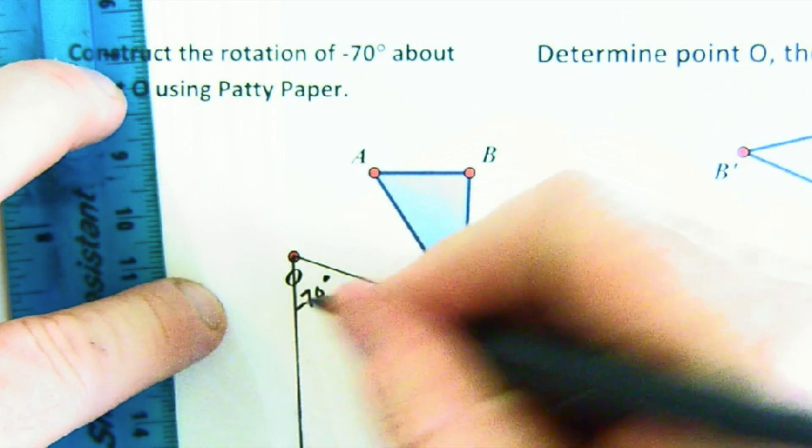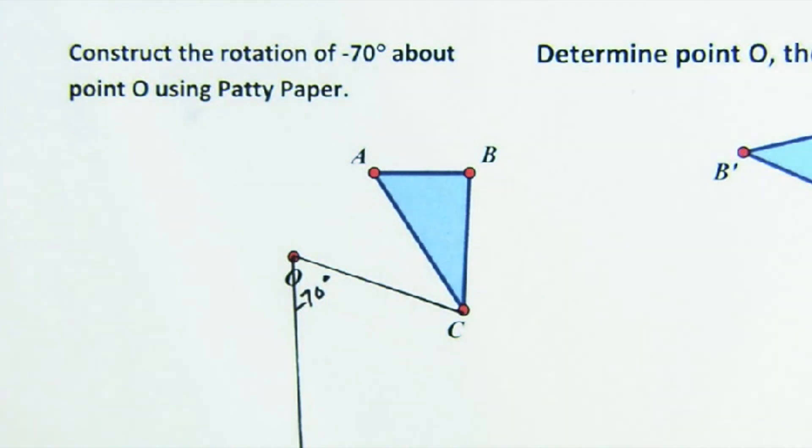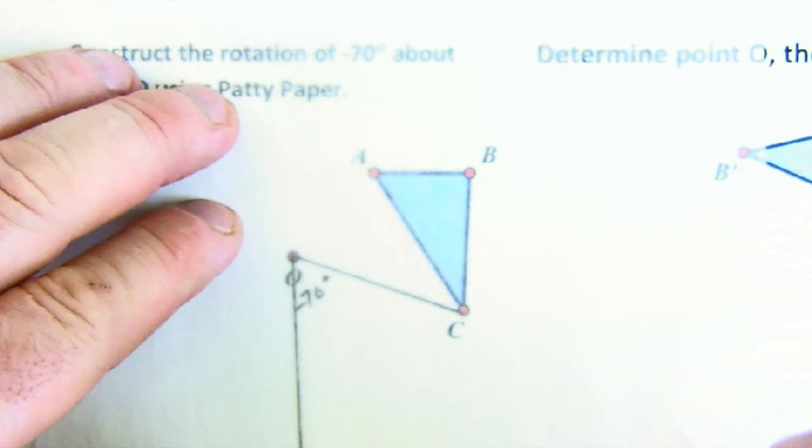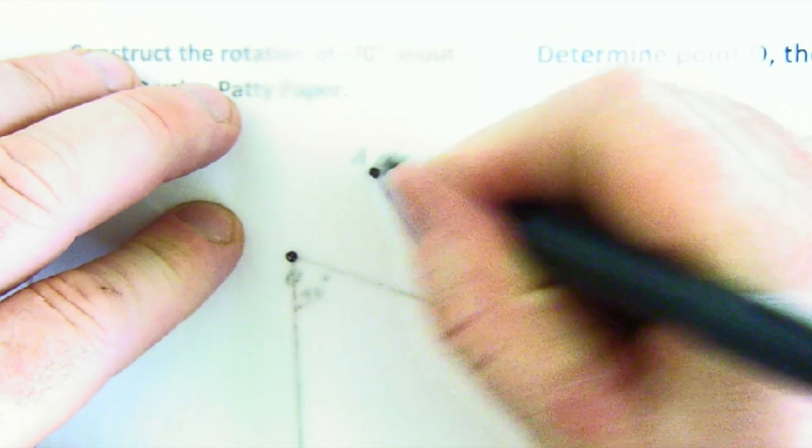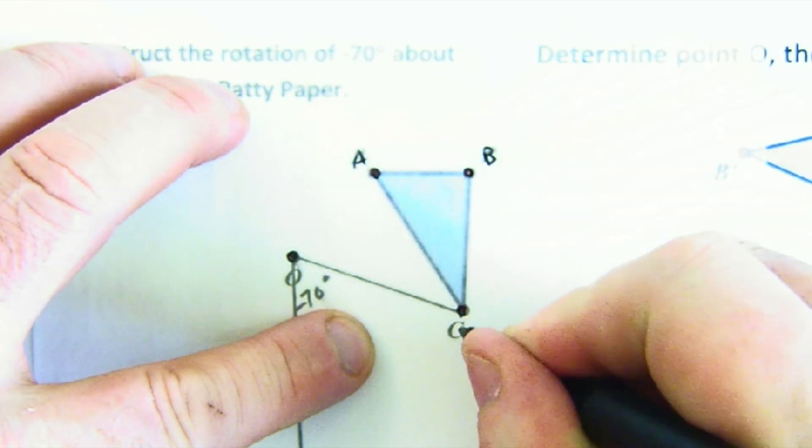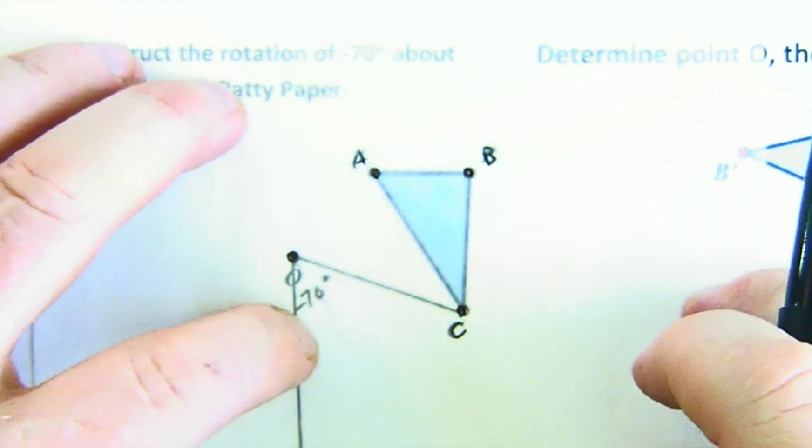Negative 70, by the way. Now watch how easy this is, and this is why we love patty paper. I'm going to mark my center, I'm going to mark A, mark B, and mark C.